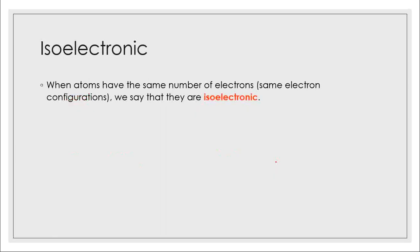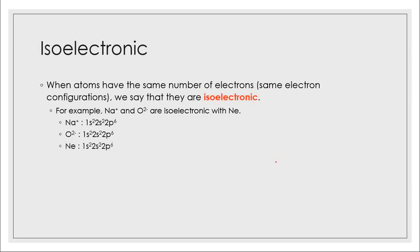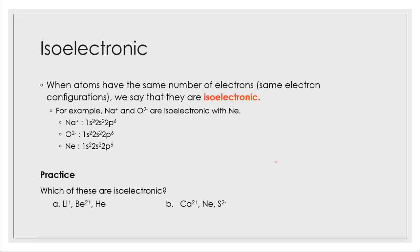Last thing before we end: when atoms have the same number of electrons — in other words the same electron configuration — we say they are isoelectronic. For example, sodium ion and oxygen ion are isoelectronic with neon. Sodium ion is 1s2, 2s2, 2p6; oxygen ion is 1s2, 2s2, 2p6; and neon is also 1s2, 2s2, 2p6. They have the same electron configuration, so we say they are isoelectronic. Now try: which of these sets are isoelectronic, set A or set B? Set A is the correct answer — all of those atoms and ions have the same configuration as helium, 1s2, meaning they all have two electrons.